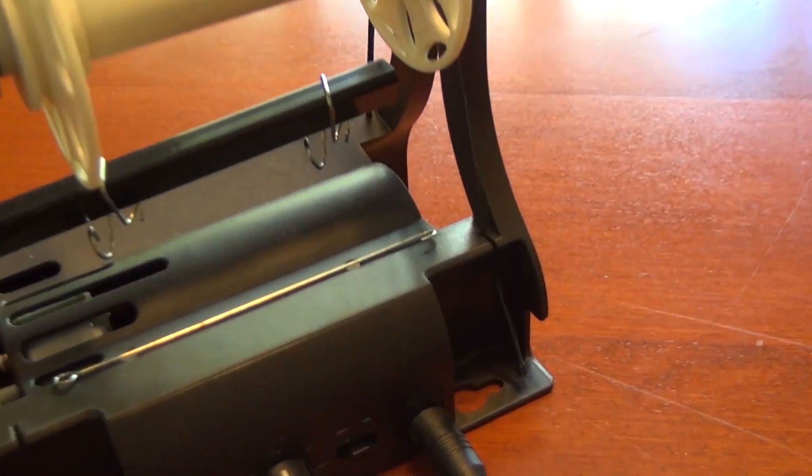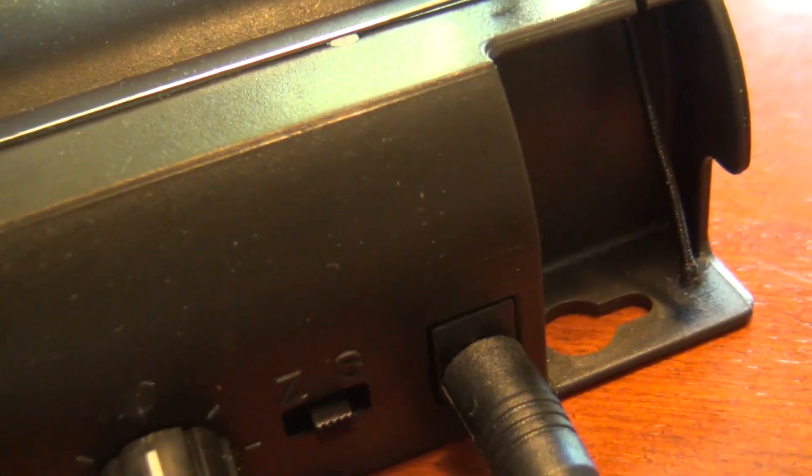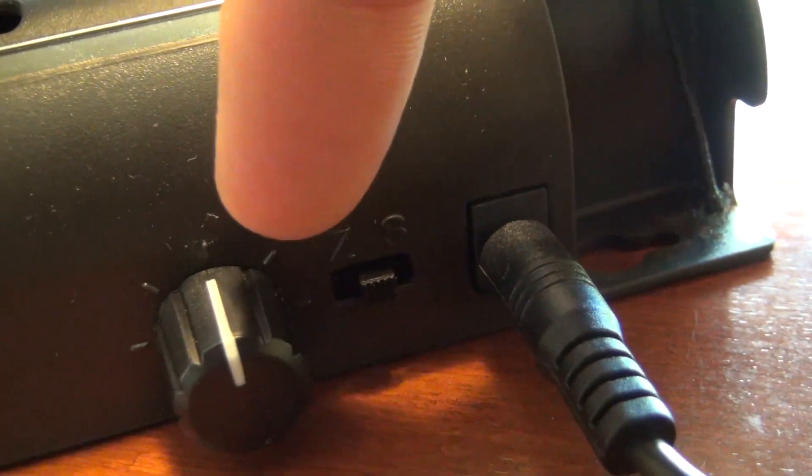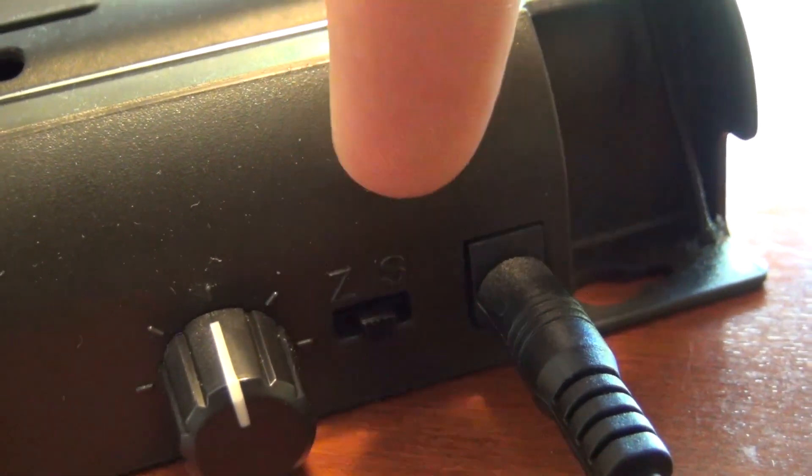This power switch has three positions. The forward position has a Z. This means it is Z twist. The middle position is off and the back position is S twist.